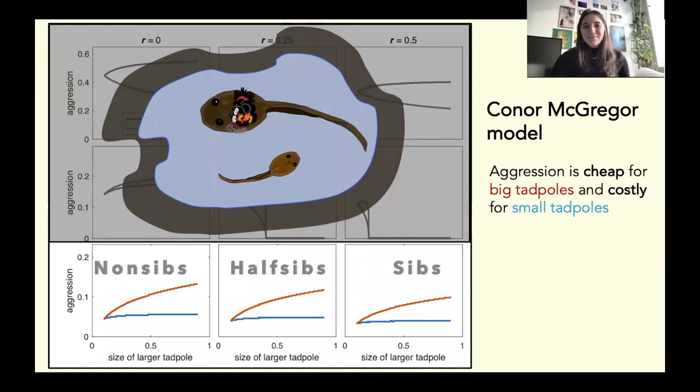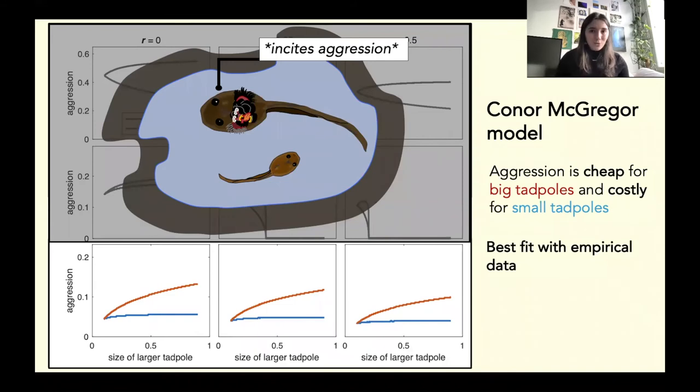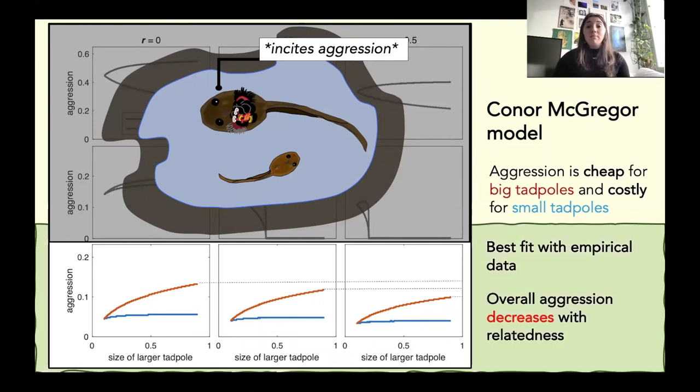Our next model is the Conor McGregor model, and so in this version aggression is cheap for big tadpoles and costly for small tadpoles, and so this is actually the model that we saw was closest to our empirical data. So in general large tadpoles are more aggressive but this aggression decreases with increased relatedness and that this was really the best fit for what we saw with our lab trials. So this is actually really interesting because we're able to confirm with both empirical and theoretical standpoints that one of the reasons we're seeing this behavior in large tadpoles is because aggression for large tadpoles must not be very costly.